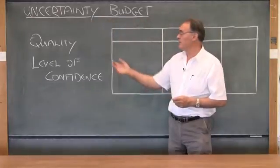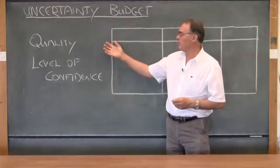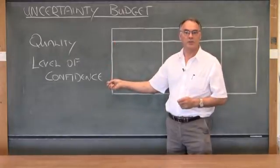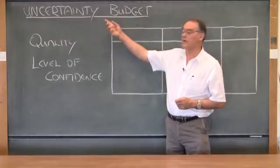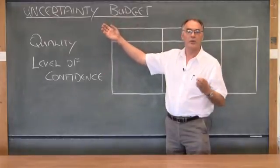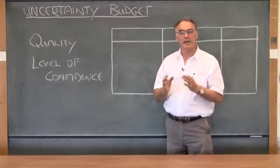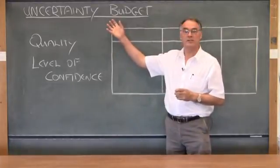You can see that these terms, the quality of the work, the level of confidence with which the result of the experiment is being quoted, all tie directly to the uncertainty. In what way was the uncertainty quantified? And that is what the uncertainty budget does.